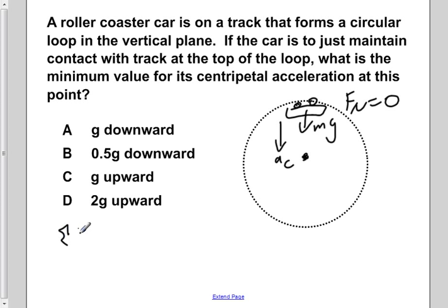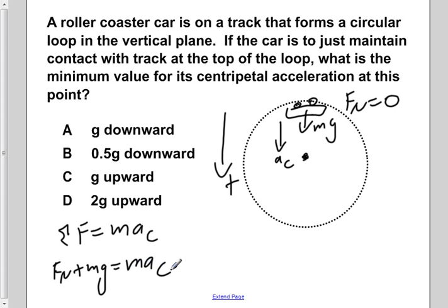If we apply Newton's second law, the net force is equal to m times a centripetal. F is the sum of all forces. If we consider down to be the positive direction, we have Fn plus mg equals ma centripetal. As we stated, we're just maintaining contact, so our normal force is equal to zero. We can ignore that term,